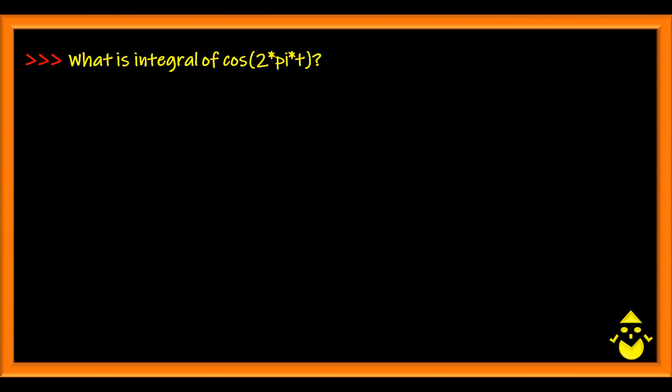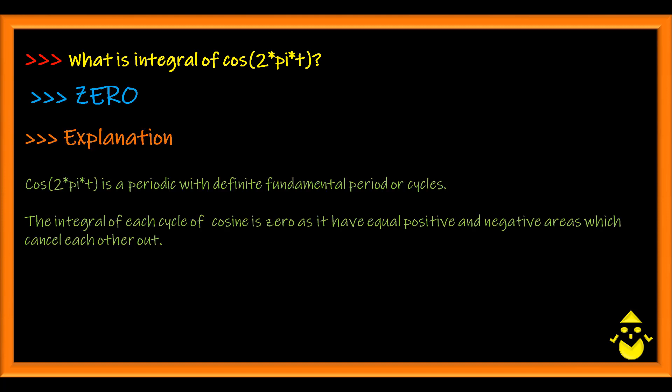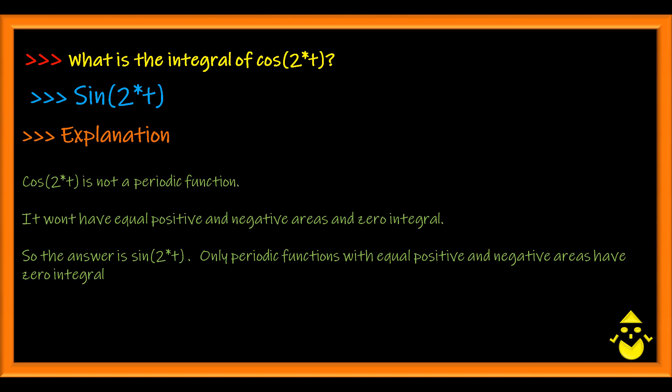What is the integral of cos 2 pi t? It is a periodic function with equal positive and negative areas which sum to 0. What is the integral of cos 2t? It is sine 2t. Why? Since cos 2t is without a pi, which means it's not periodic, making the integral of cos 2t not equal to 0, and by trigonometric identity, integral of cos is sine, so you end up answering as sine 2t.